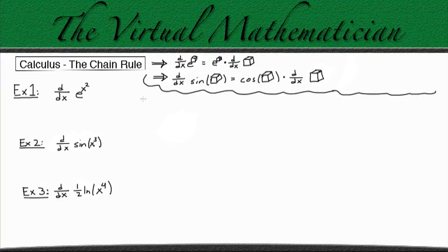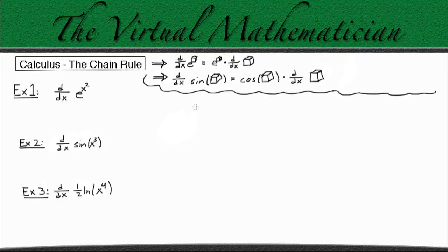Let's consider the exponential function first, since we know the derivative of the exponential is always itself. So the derivative of e to the box equals e to the box, but the chain rule says to multiply that by the derivative of what's inside the box as well. For sine, the derivative of sine box equals cosine box, times the derivative of the box. We just take the derivative of our function as usual and then multiply it by the derivative of whatever function is inside of it.